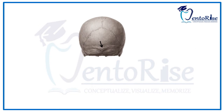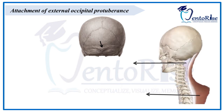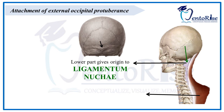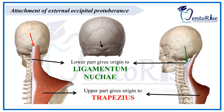Now let's learn about the attachments of the external occipital protuberance. The lower part gives origin to ligamentum nuchae, marked in the figure with a green arrow. The upper part gives origin to the trapezius muscle, marked in the figure with a red arrow. It becomes very easy to memorize these things when done with the help of figures and diagrams.